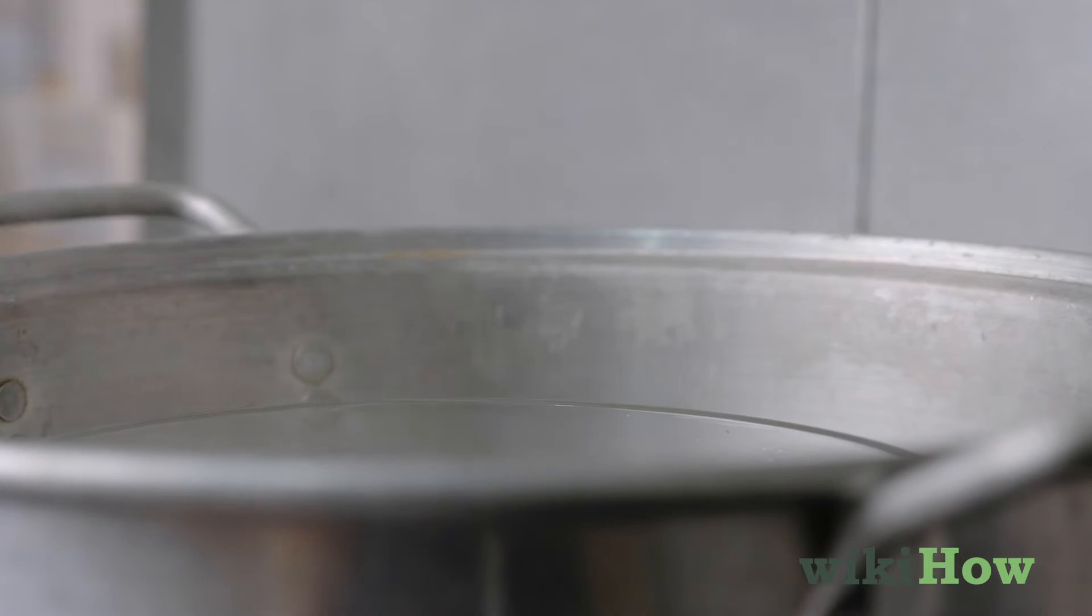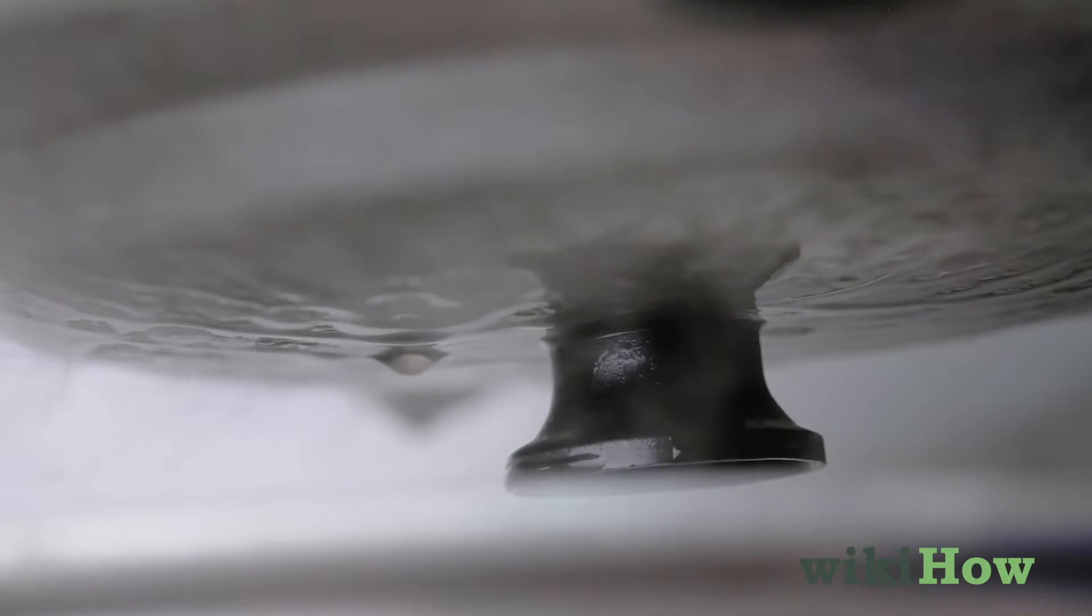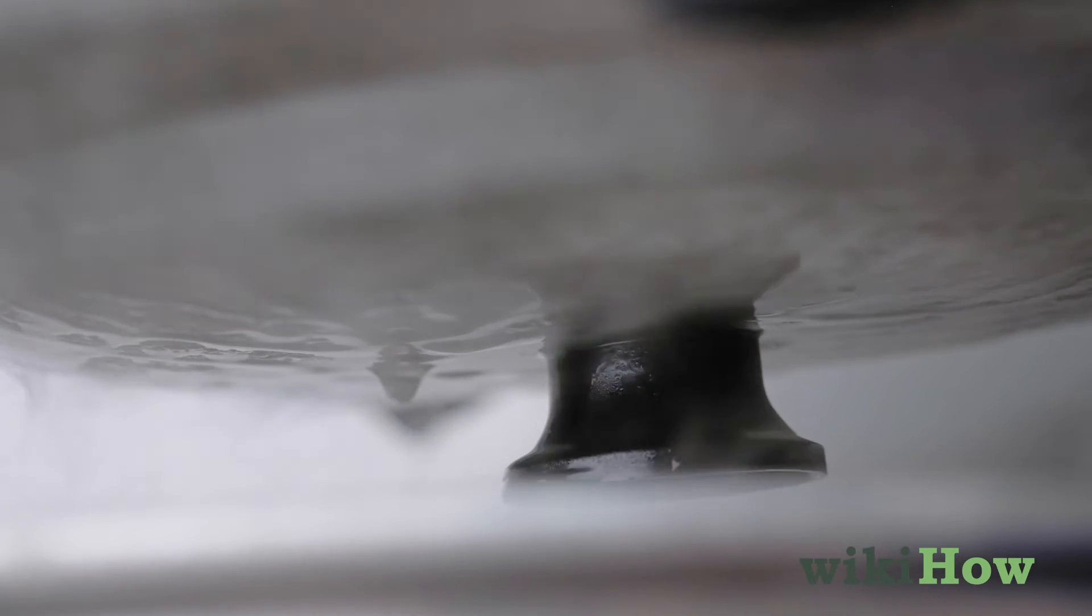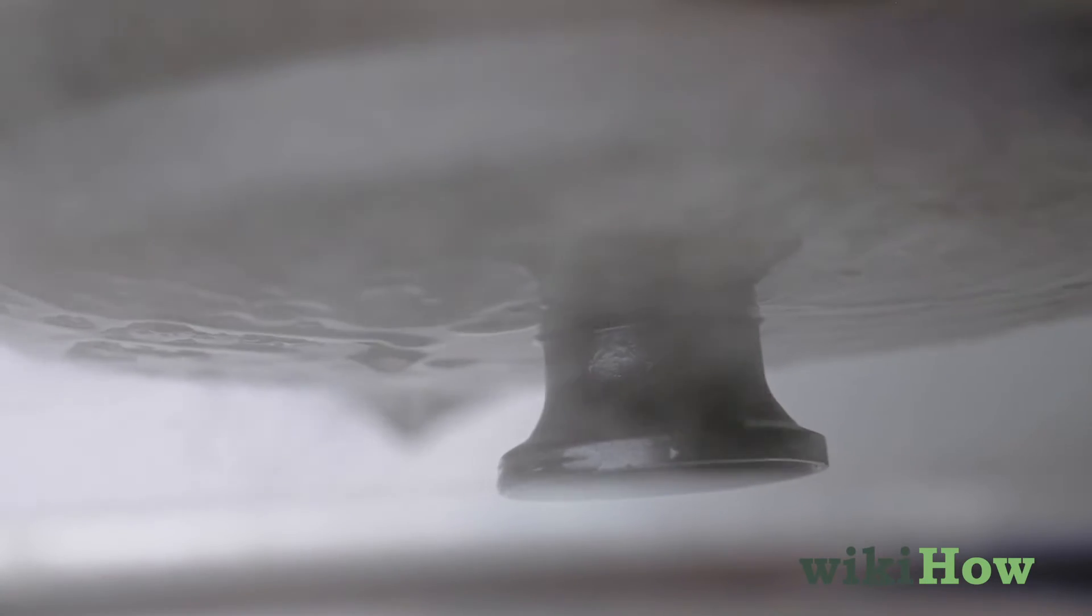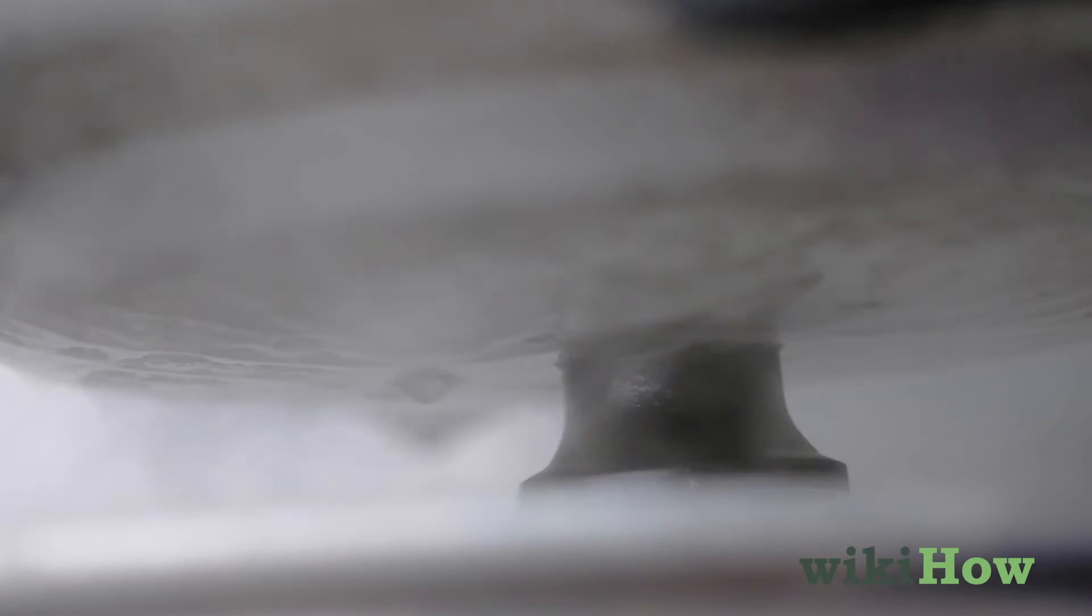The boiling water will turn to steam, rise up, and condense on the cold lid. When it condenses, it will drip back down into the bowl and fill it with distilled water.